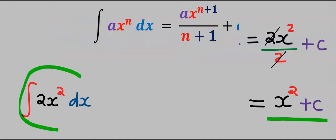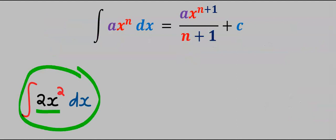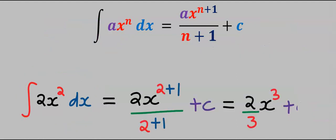Let's integrate 2x squared. If you solve correctly, according to the formula, this is our result. This is our answer.